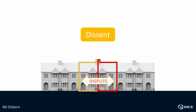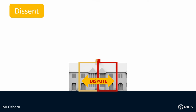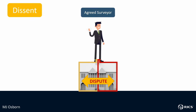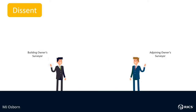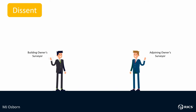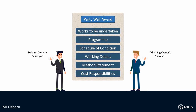If consent is not received within 14 days, plus 10 days on further notice, or they dissent, then the parties will be deemed to be in dispute. At this point, the two parties are required to appoint a surveyor to act for both sides, known as the agreed surveyor. Alternatively, each party can appoint their own surveyor, who will then appoint a third surveyor to adjudicate if they cannot agree.